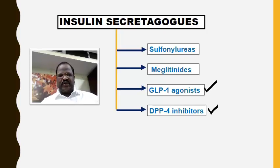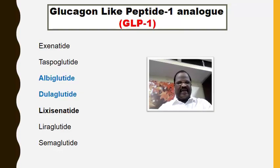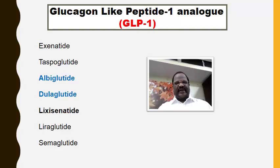First, examples for GLP-1 analogs. GLP means glucagon-like peptide. Examples for GLP-1 analogs are exenatide, taspoglutide, albiglutide, dulaglutide, lixisenatide, liraglutide, and semaglutide. All these are examples for GLP-1 analogs. What is the mechanism of action?